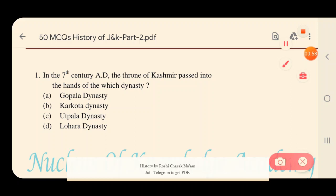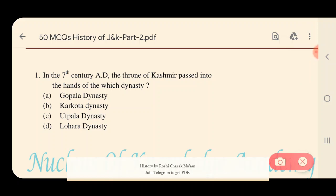Question 1: In the 7th century AD, the throne of Kashmir passed into the hands of which dynasty? Options: A) Gopal dynasty, B) Karkota dynasty, C) Utpala dynasty, D) Lohara dynasty. The answer is option B — Karkota dynasty.